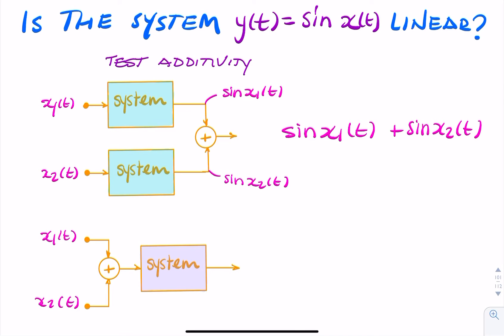Then I'll do the same again and see if I get the same output, but this time I'll add the inputs before feeding into the system. At this point I'll have x1 + x2, and that will be the input to the system. What does the system do? It takes the input and calculates the sine. So here the output would be sin(x1(t) + x2(t)).